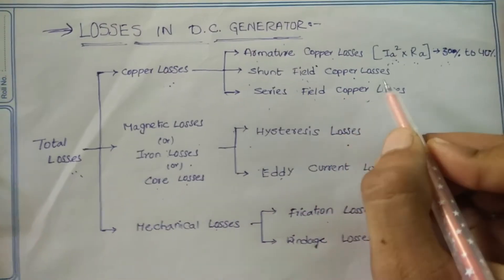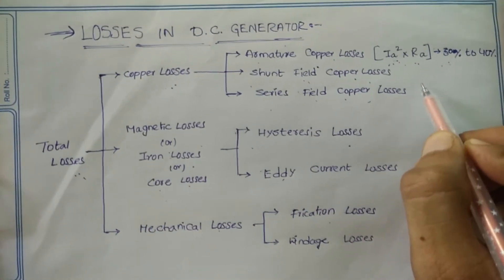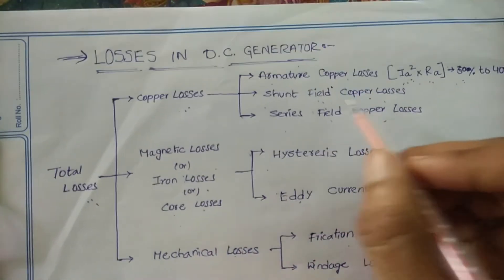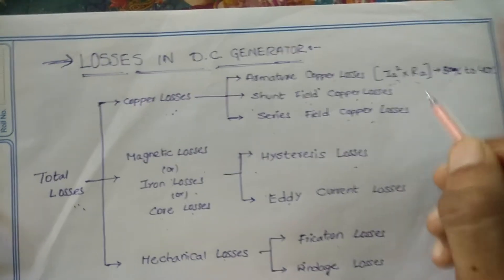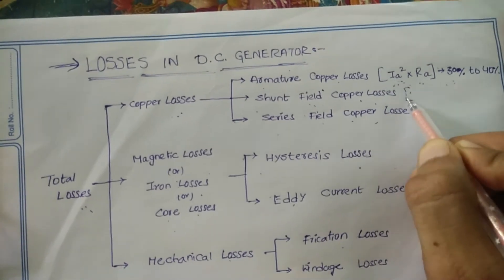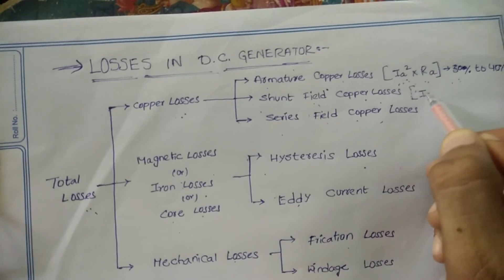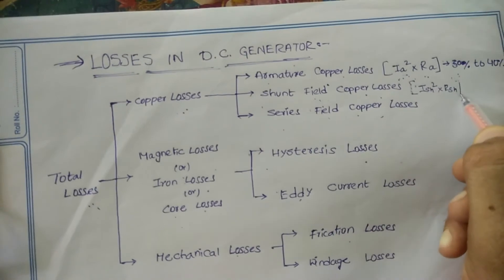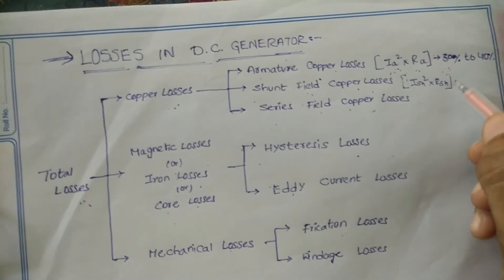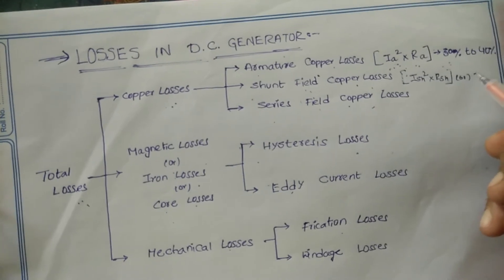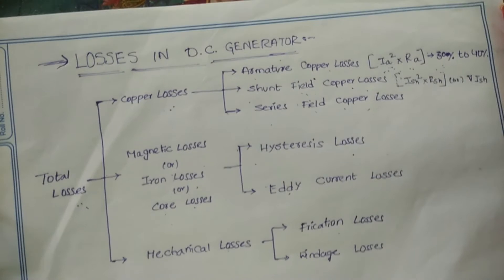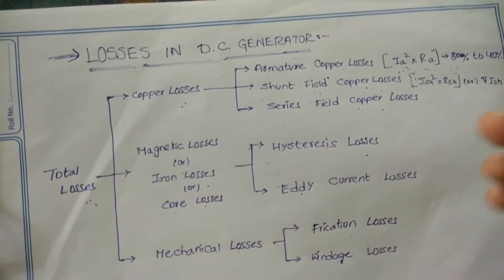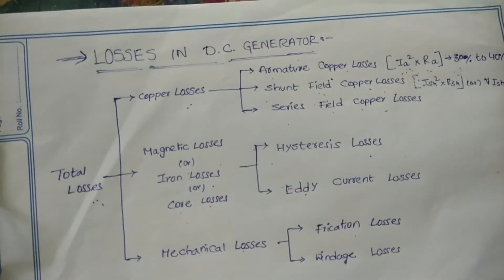Next are shunt field copper losses. In the case of a shunt generator, the shunt field copper losses are equal to I_sh² × R_sh, or V × I_sh. These losses are essentially constant, so the shunt field copper losses are considered constant losses.